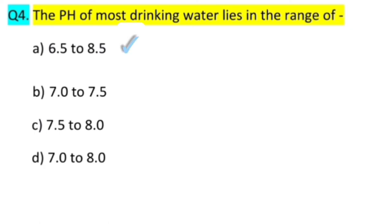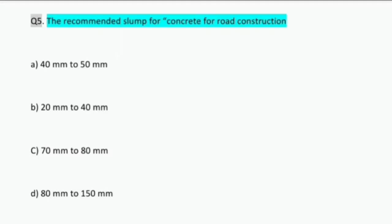According to WHO and IS 3025 part 50 1984, the value should be for drinking water 6.5 to 8.5.